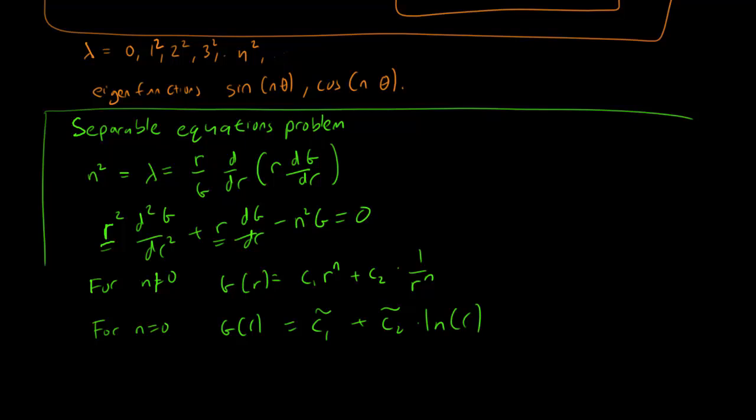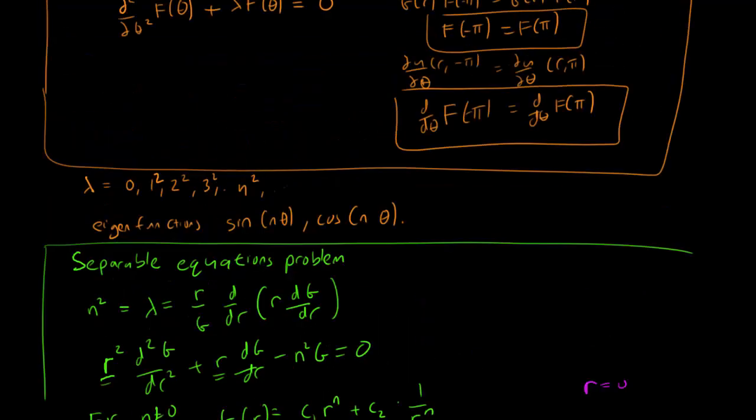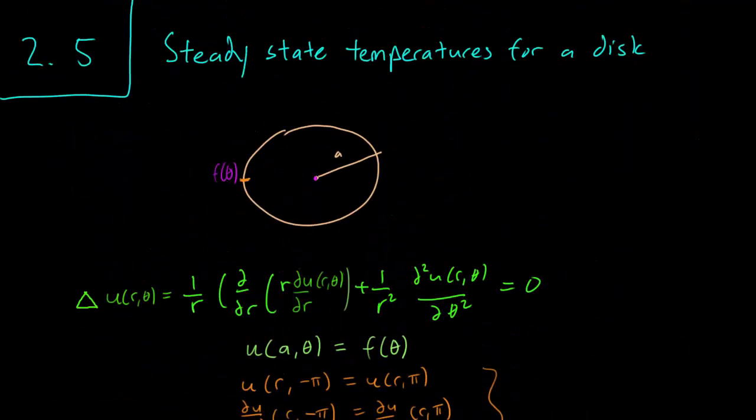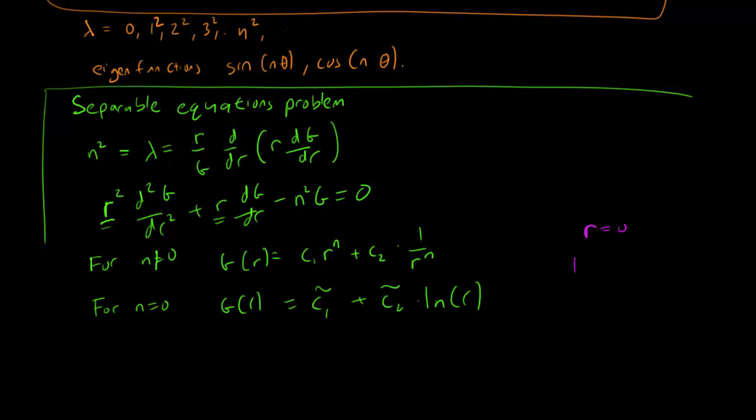Note, however, that for r equals 0, in the center of our circle over here, log r becomes minus infinity. And this doesn't make any sense. It doesn't make sense to have an infinite temperature anywhere inside the disk. So we can just rule out this case. So here, obviously, c2 has to be 0. And it turns out that for n equals 0, our only solution is c1, for some constant.